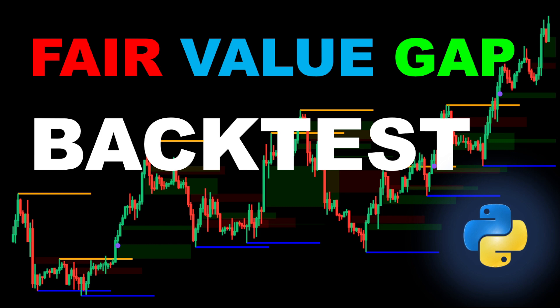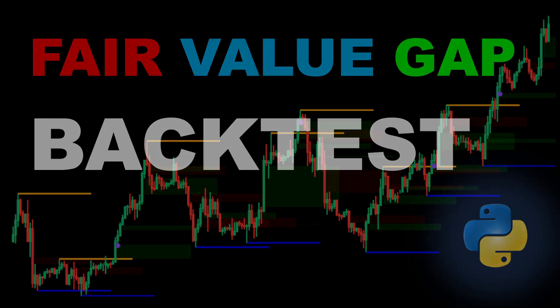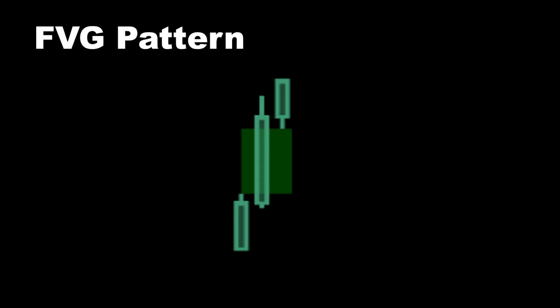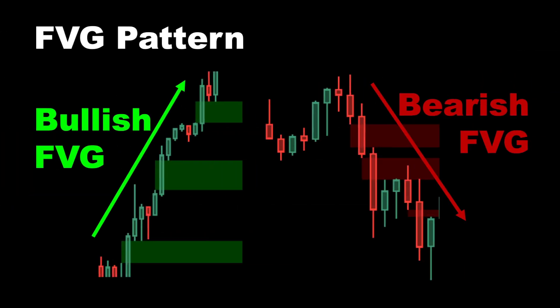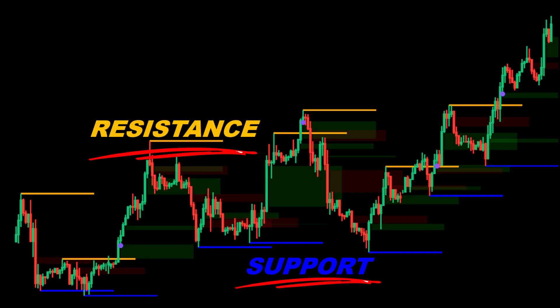The Fair Value Gap indicator was introduced in one of our previous videos — I will leave a link to that video in case you are interested in the details. In summary, we are looking for three consecutive candles showing an imbalance in price action where a gap forms between the first and the third candles, signaling potential areas where price may revisit. We will distinguish between bullish and bearish fair value gaps, but identifying them alone is not enough for a robust trading strategy. To improve reliability, we will combine this indicator with support and resistance levels to build a more structured approach.